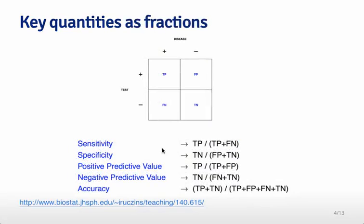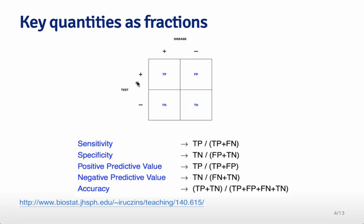You can write these as fractions. For example, sensitivity is the probability that, given you are diseased, we called you diseased. We look at the first column — all the people that are diseased — and what fraction did we get right? That's true positives divided by true positives plus false negatives. For positive predictive value, we look at all positive tests: it's true positives divided by true positives plus false positives, because we're asking what fraction of positive tests we got right.